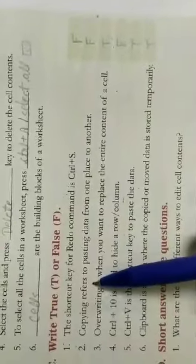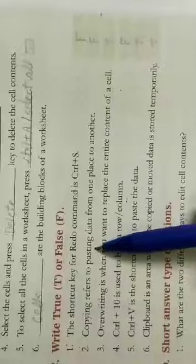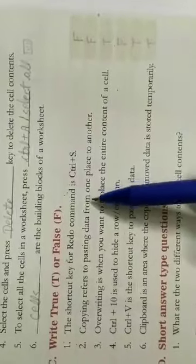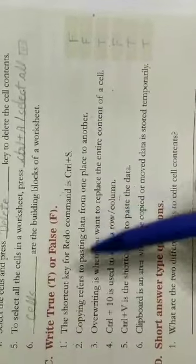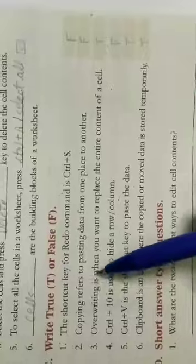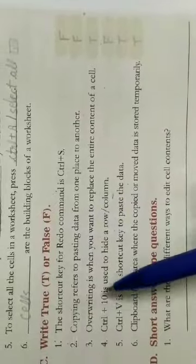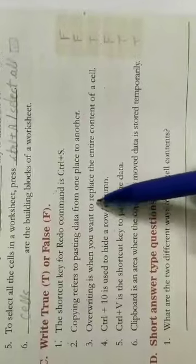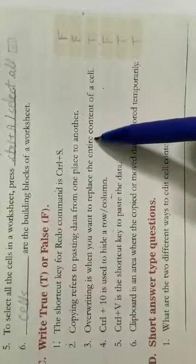Second one: Copying refers to pasting data from one place to another. This is also false because copying means to make a duplicate of the content or the data. Third: Overwriting is when you want to replace the entire